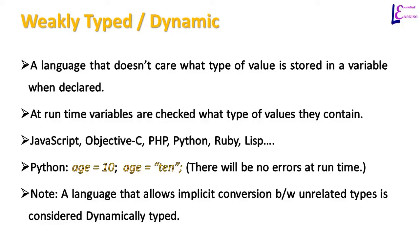For example, in Python, a variable age can store an integer value in one statement and a string value in another statement. Both lines of code will successfully run without errors. These types of languages allow implicit conversion between unrelated types, which is why they are also called dynamically typed.